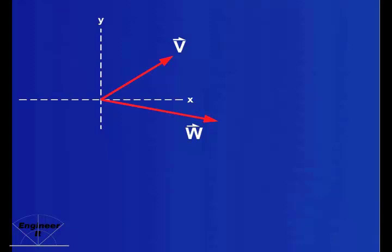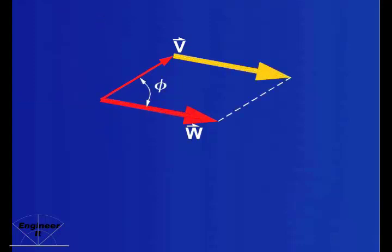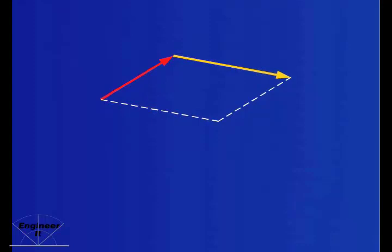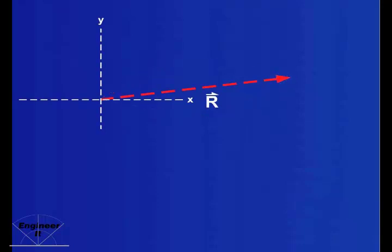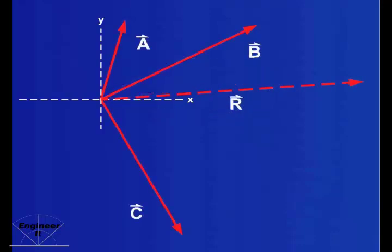Visualize vector W extending from the tip of vector V. While vectors can't actually be moved from their line of action, this is another way to imagine the parallelogram method, commonly referred to as the tip to tail method. This method is very useful in visualizing a resultant vector, especially for multiple vectors. Here, we can find the sum of vectors A, B, and C by lining them up tip to tail.